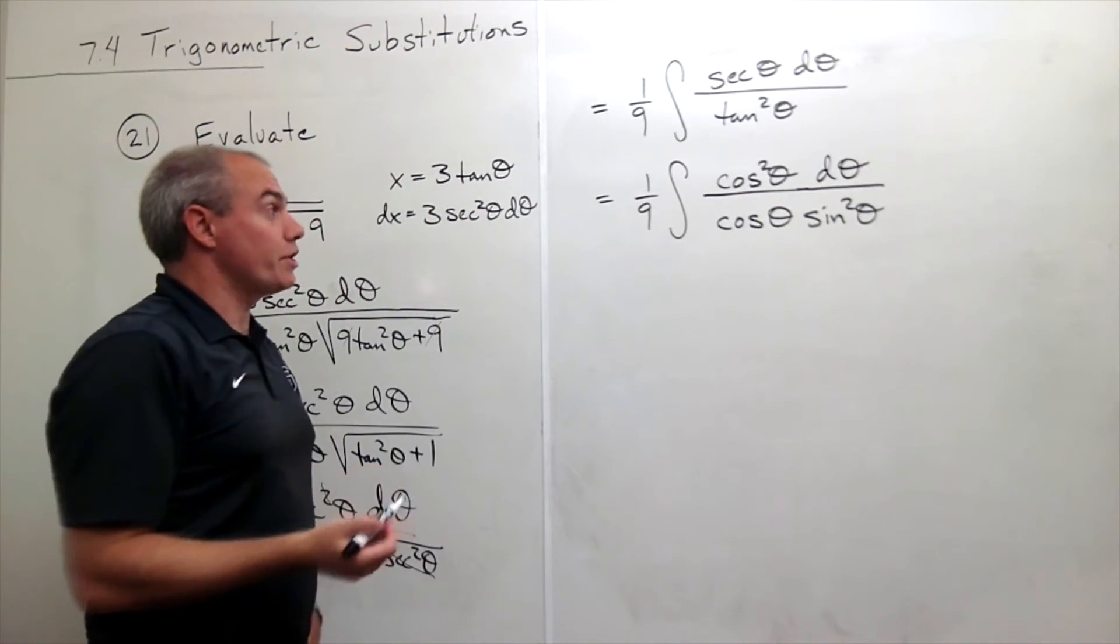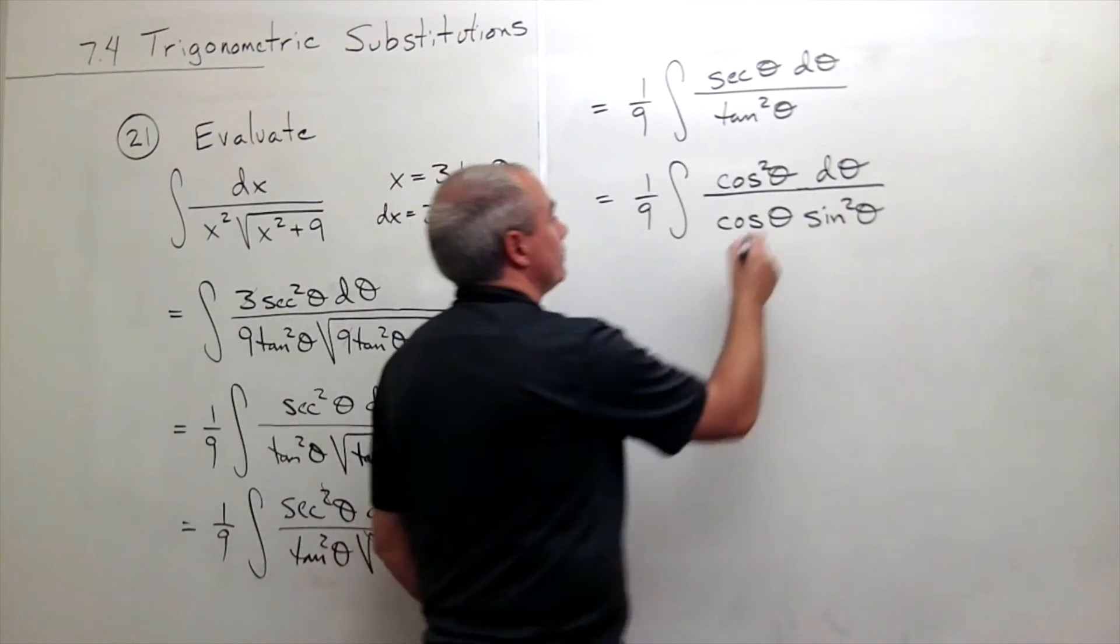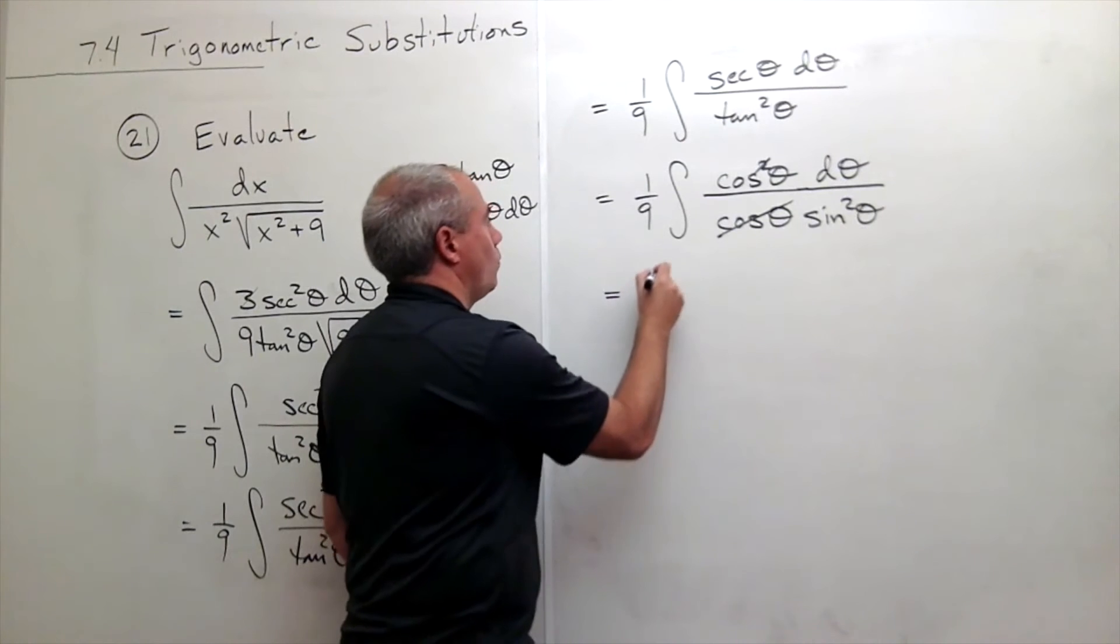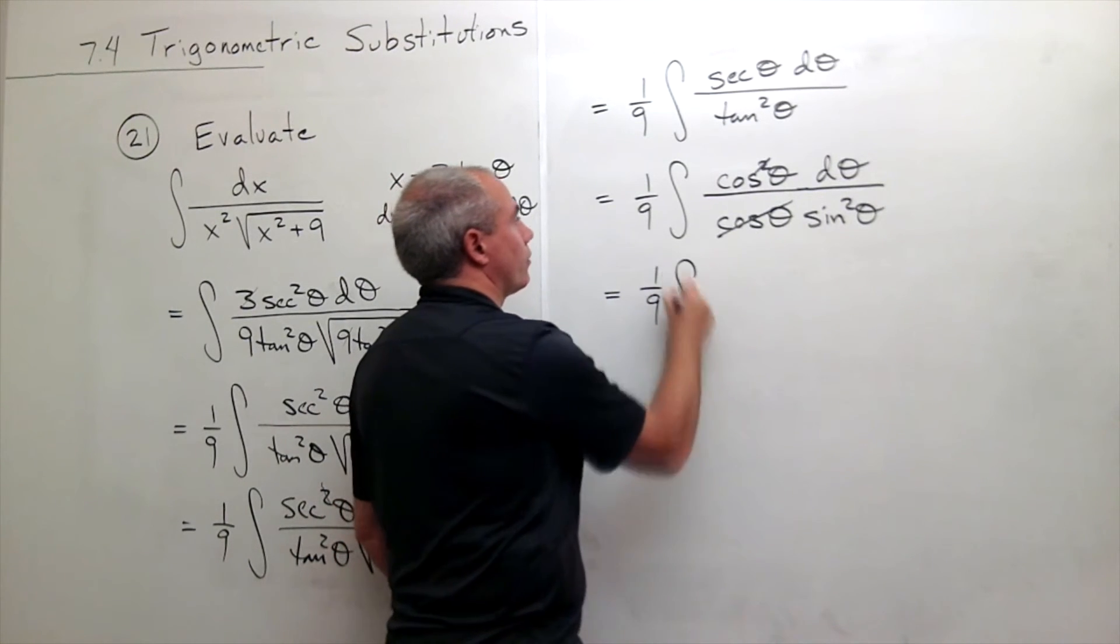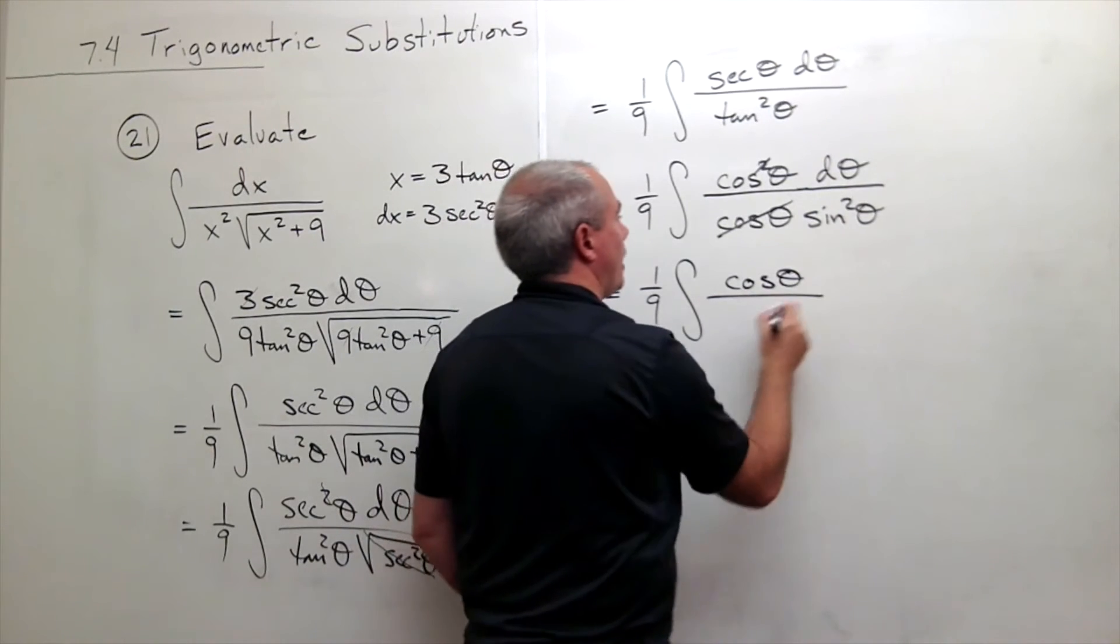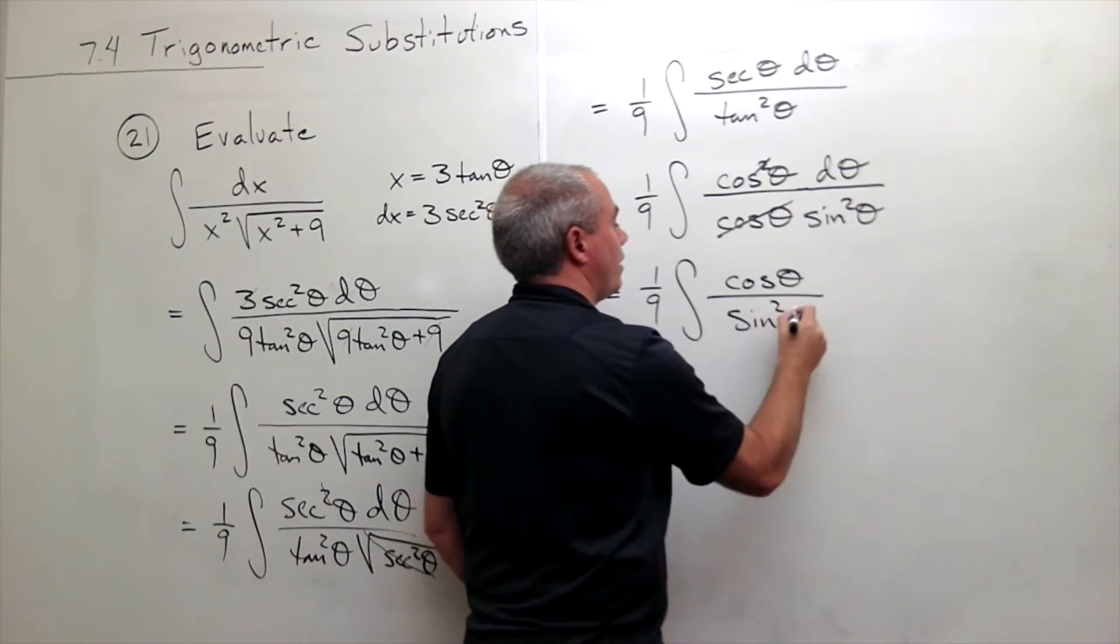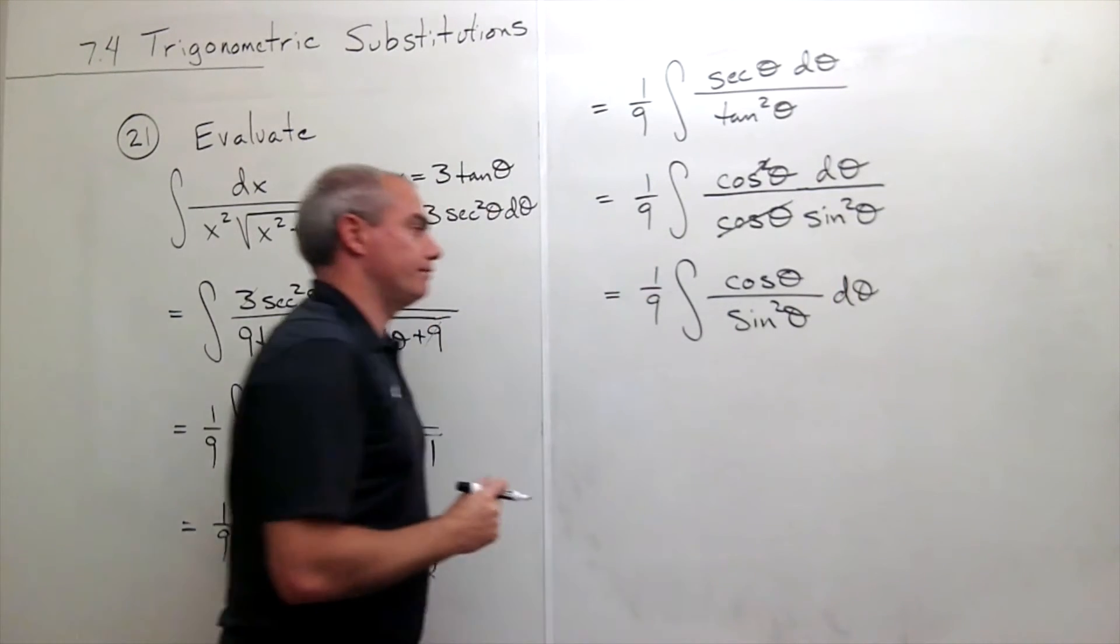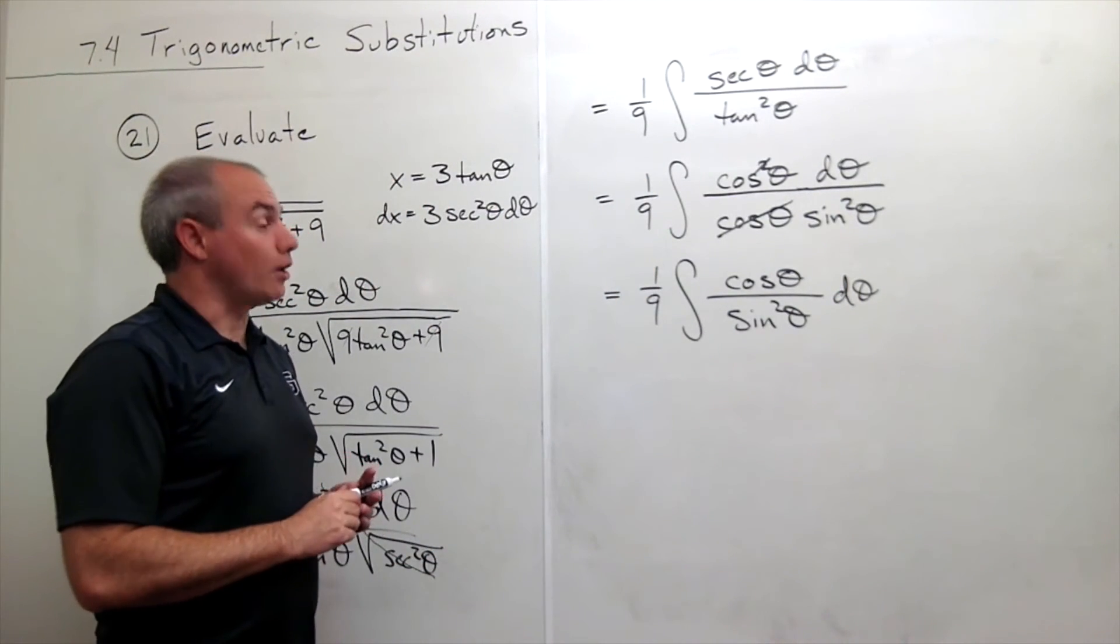One of those cosines cancels and I'm left with 1 9th integral. I have a cosine theta on top, I have a sine squared theta on the bottom, d theta.